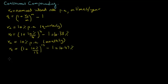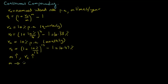So we have seen that as compounding frequency m increases, the effective annual interest rate also increases. The question is: what happens to the effective annual interest rate as m approaches infinity?